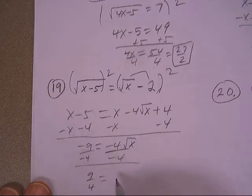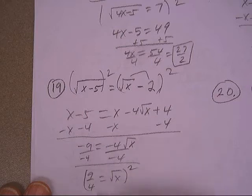The negatives turn positive, and I get this, square both sides, 81 sixteenths equals x.